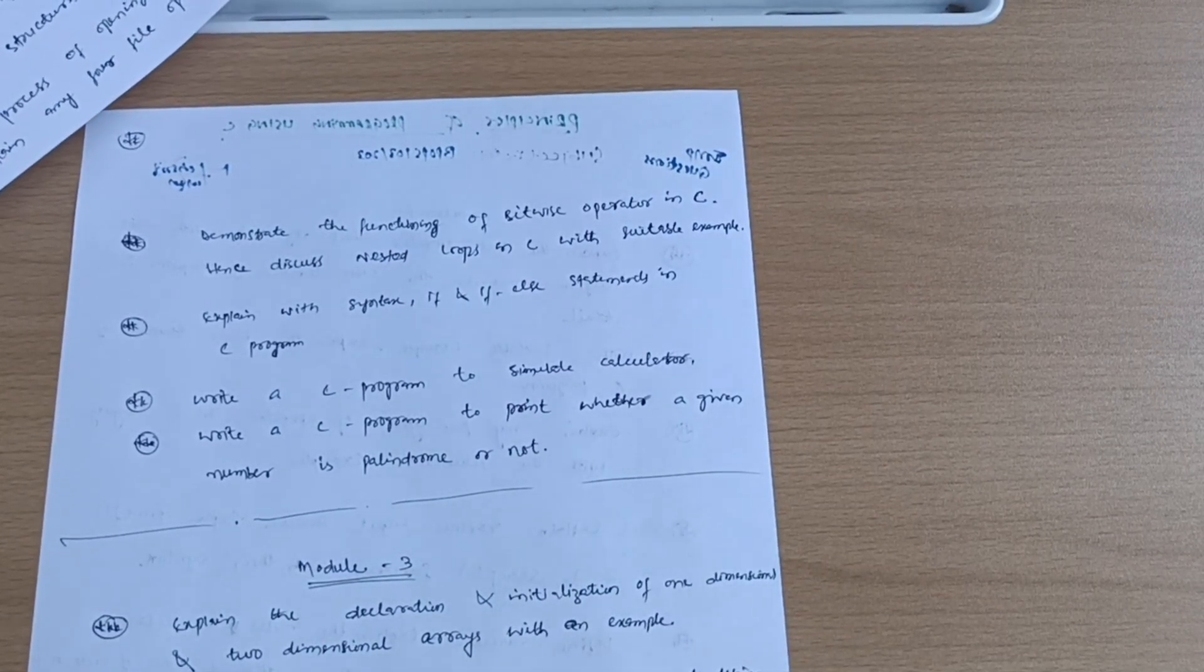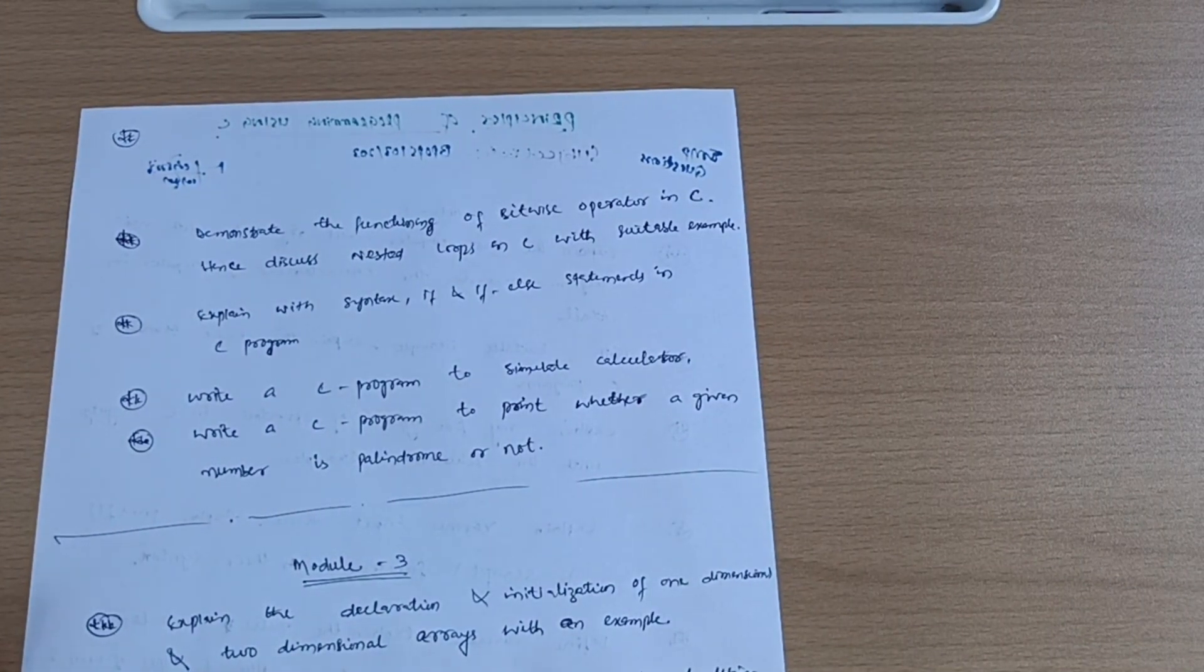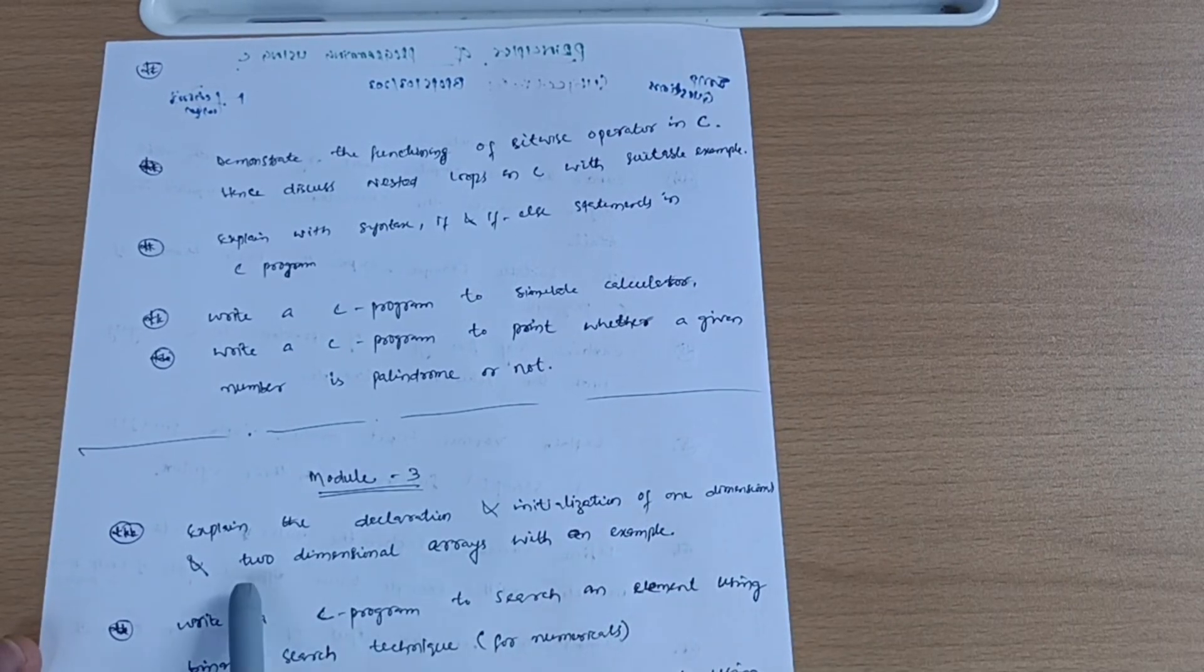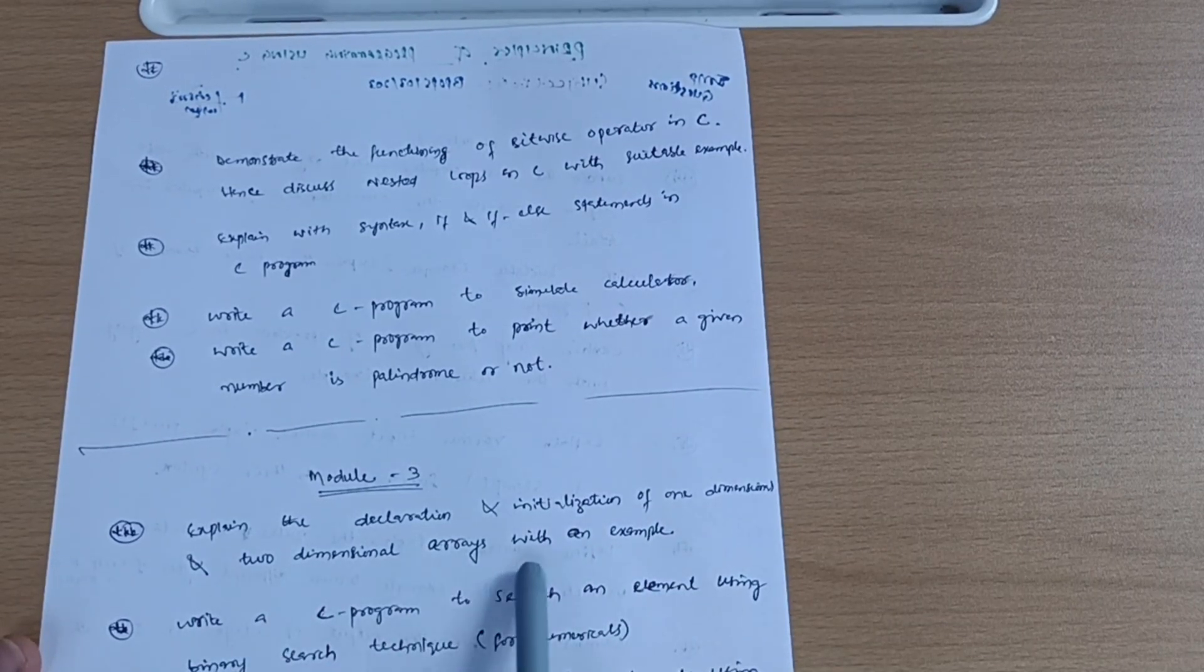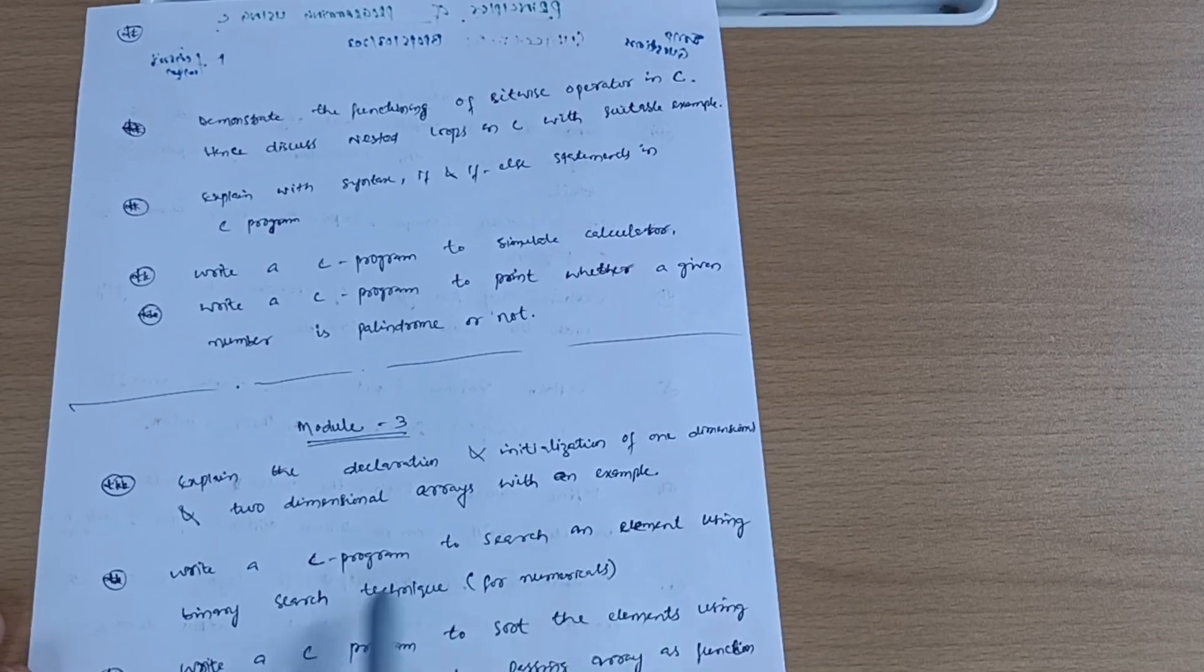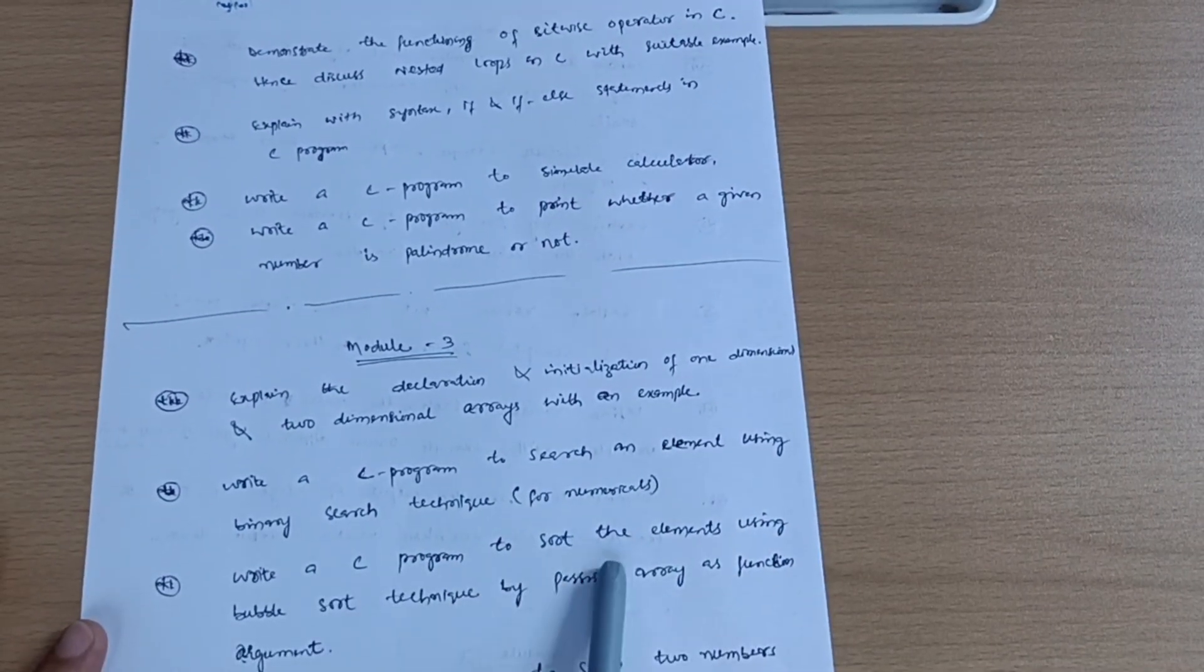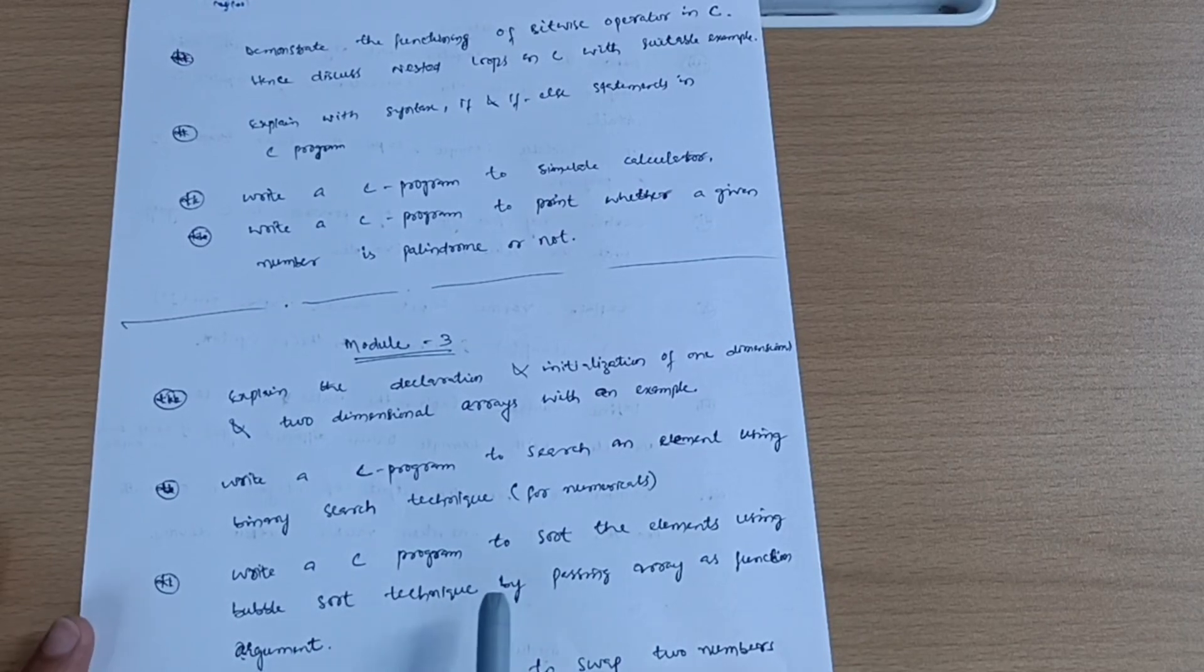If I talk about module third: explain the declaration and initialization of one-dimensional and two-dimensional arrays with example, write a C program to search an element using binary search technique with numericals, write a C program to sort elements using bubble sort technique.